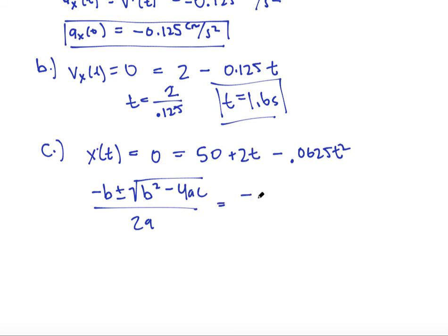So that will be negative 2 plus or minus the square root of 2 squared minus 4 times 50 times negative .0625 square root, all over 2 times negative .0625.